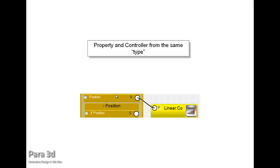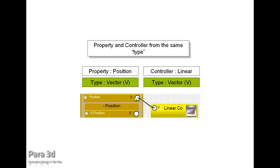In Para3D there is one important rule: what a controller is creating in terms of output should be the same type as the property. So for example, if a property is in type of vector, the controller which is going to control it has to be in the same type.